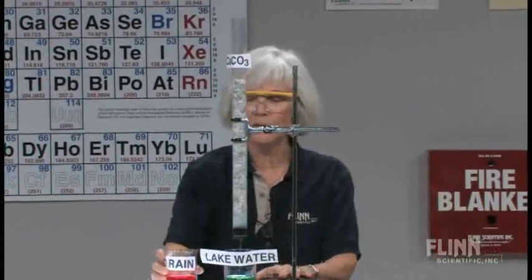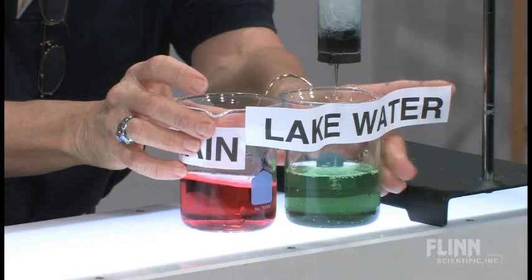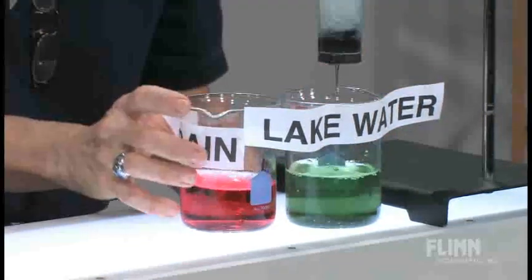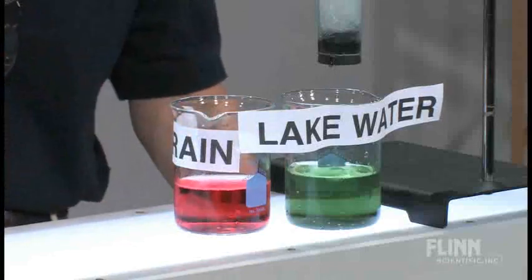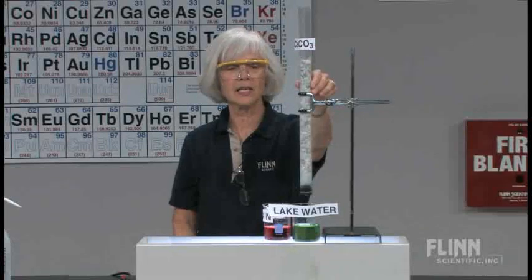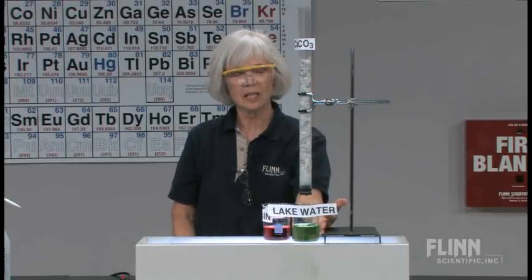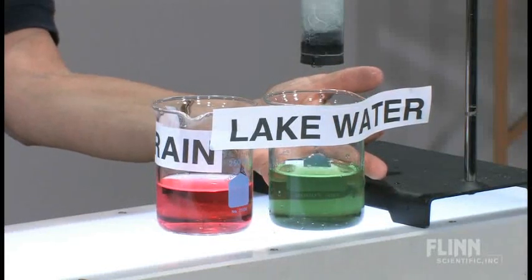What we want to do is observe our lake water, which is now green, compared to our acid rain, which is this orange color. What's happened here? Well, most importantly, the marble chips have neutralized the acid rain. That's why we're moving on our ROY-GBIV color scale for universal indicator towards the green.